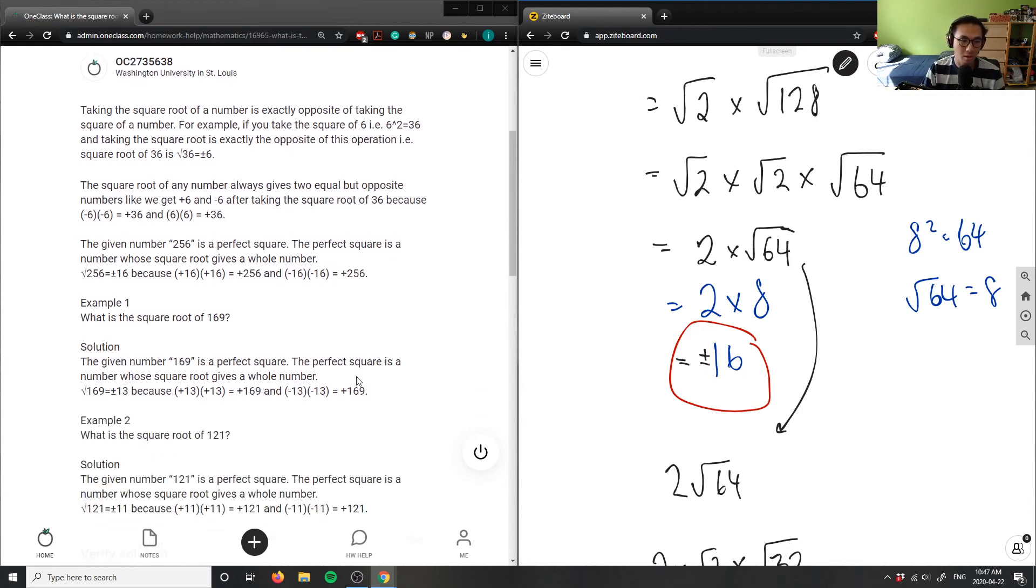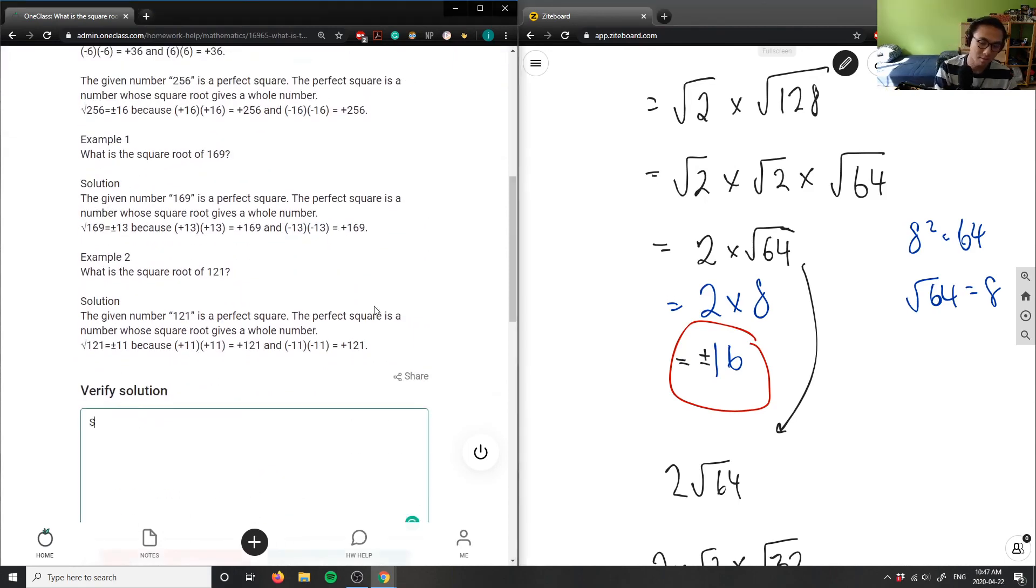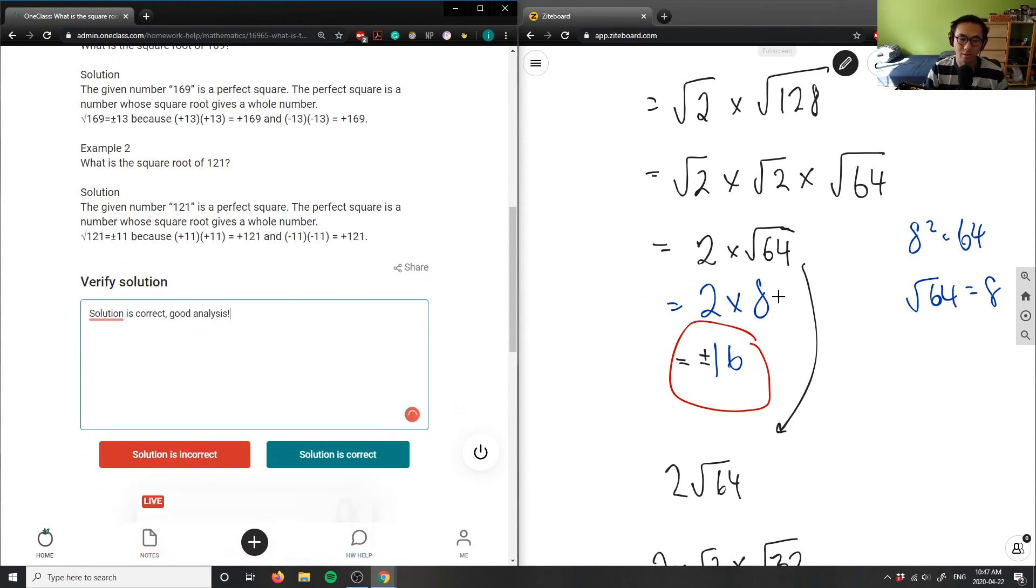That's good. And then they did some other stuff here. This solution is correct, good analysis here. So again they have a perfect square, so this is actually a very easy question to solve. It's actually a perfect square here.